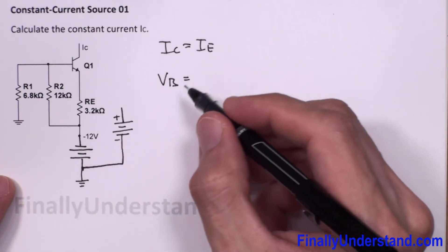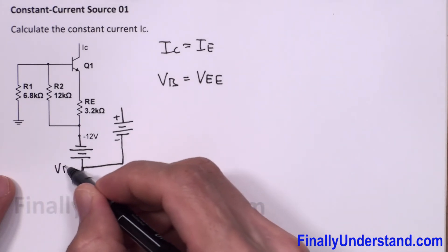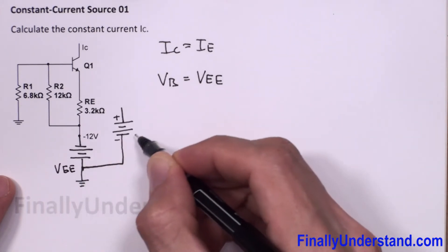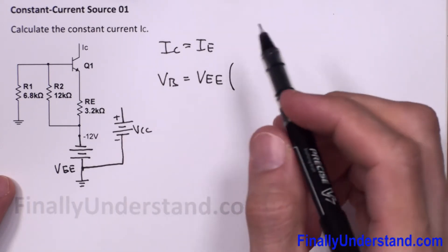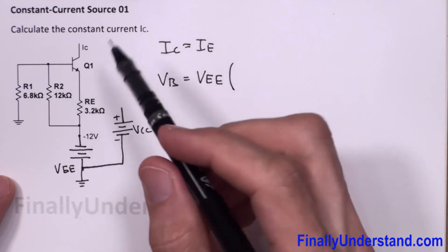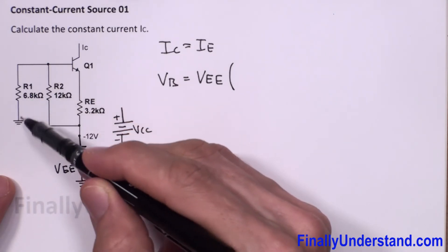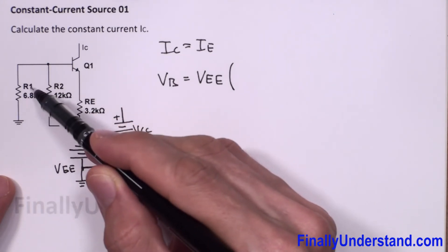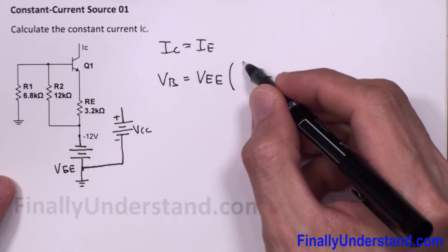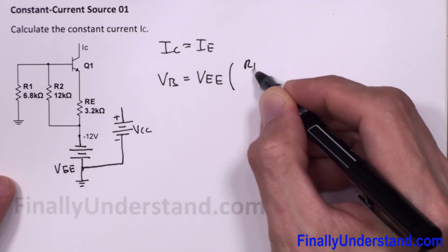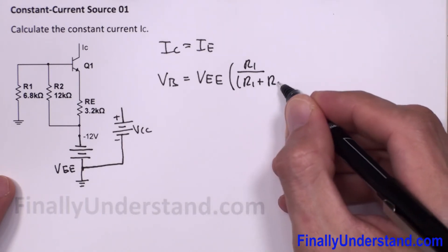The voltage source is VEE, and I'm looking for the voltage at the base of the transistor — that is, the voltage from the base to ground, which is the voltage across resistor R1. So VB equals VEE times R1 over (R1 plus R2).